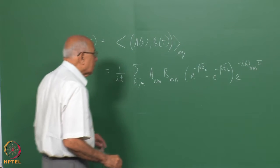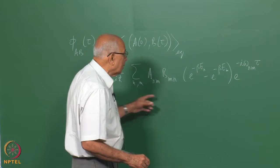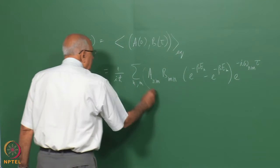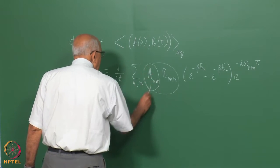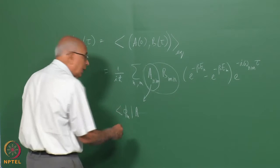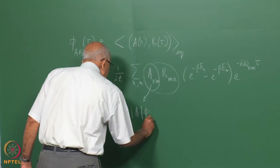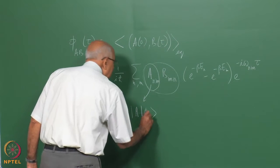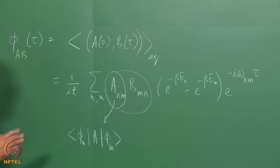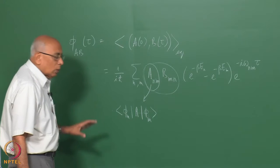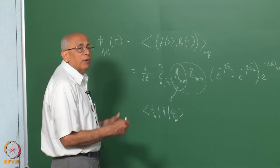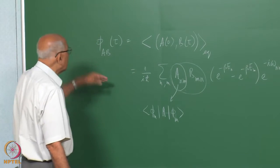Checking those factors from memory — A_{nm} is ⟨φ_n|A|φ_n⟩ in the Schrödinger picture, and likewise for B. This immediately leads to a representation for the spectral function. We are going to regard the spectral function — the Fourier transform of the response function — as a fundamental quantity, and then everything will be expressed in terms of that spectral function.